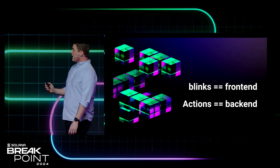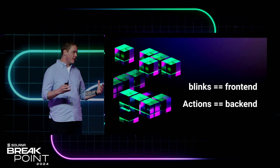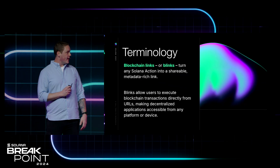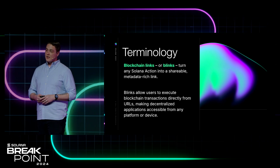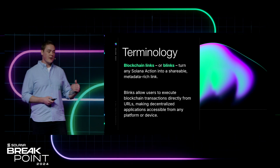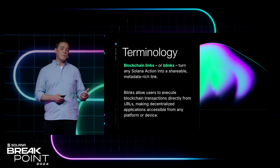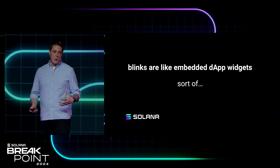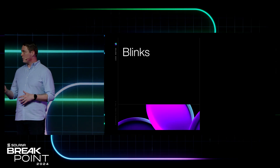So what are Blinks? In a nutshell: Blinks are the front end, and Actions are the back end. That's how I like to explain it to people since we launched Blinks and Actions several months ago. We have this official definition: Blinks is short for blockchain links, and it's basically turning shareable URLs directly to users that can bring metadata-rich experiences — that whole interface can be unfurled and displayed. It allows you to bring transactions and interact with the blockchain directly to people where they already are. In a way, Blinks are like embeddable dApp widgets — sort of — and we'll talk about why it's a 'sort of.'